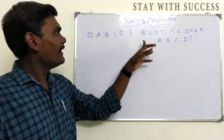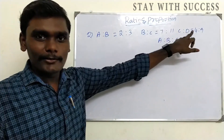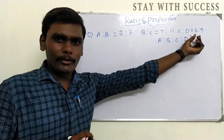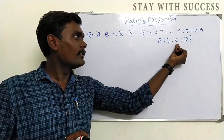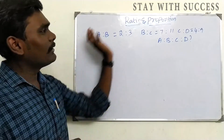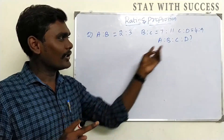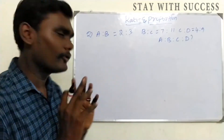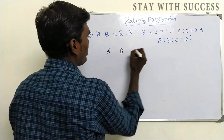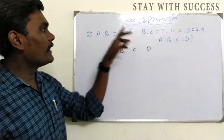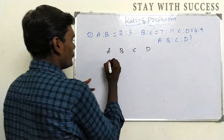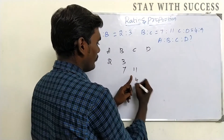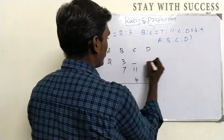Now there is a problem: A is to B is 2 is to 11, B is to C is 4 is to 9, and C is to D is 4 is to 9. There are 3 ratios with 4 variables: A, B, C, D. We count the variables — A, B, C, D — so there are 4 variables. There is an empty space to fill in the numbers.